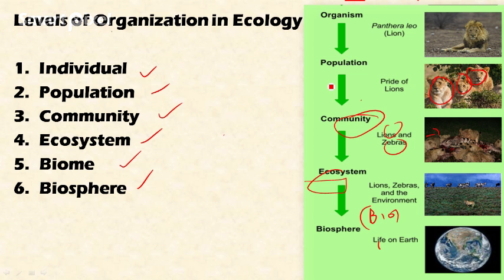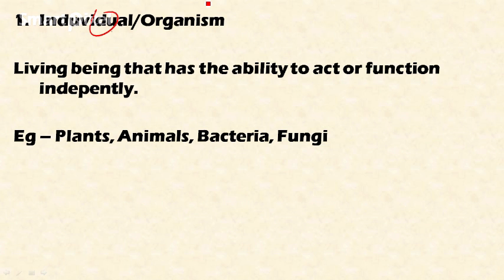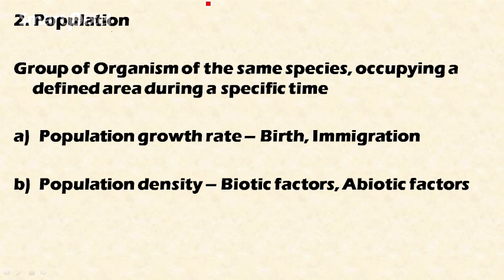The first level is the individual organism. An individual organism is a living being that has the ability to act or function independently — that's why it's called 'individual.' This is the basic unit of ecology. Examples include plants, animals, bacteria, and fungi.